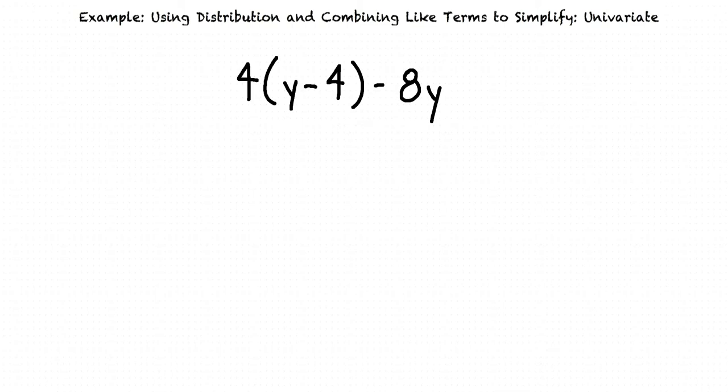To simplify this expression, we will first distribute the 4 to the y minus 4 inside the parentheses, like so. This results in 4 times y minus 4 times 4 minus 8y.